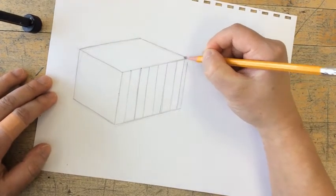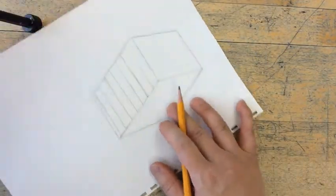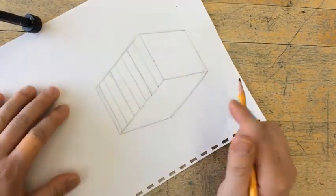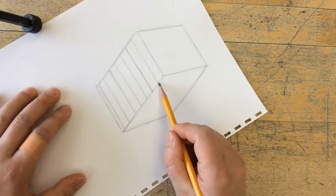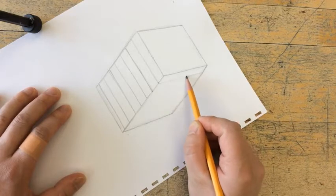So now once the sides are done, I'm going to go up to the top of my cube. Right by the edge of that line, I'm going to draw a line on the top of the cube.